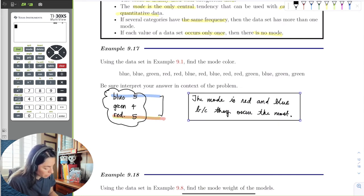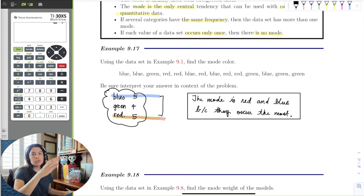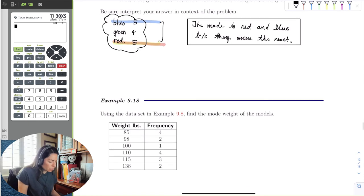That's why the mode can be used with categorical data, because you're just observing the data and observing which ones happen most frequently. With the weights of the models, this is quantitative data. We would like a frequency table because if we want to see which models' weight occurs the most...